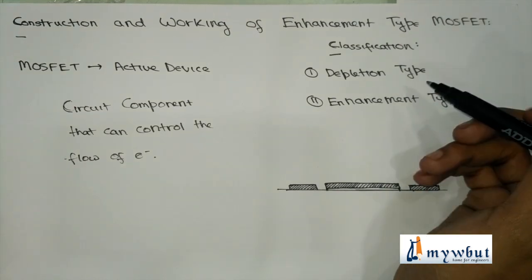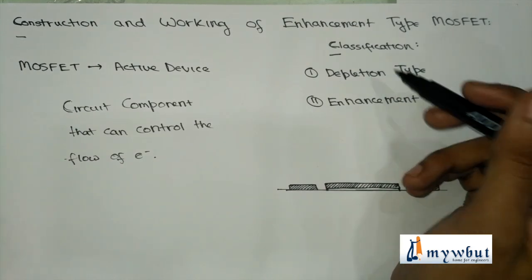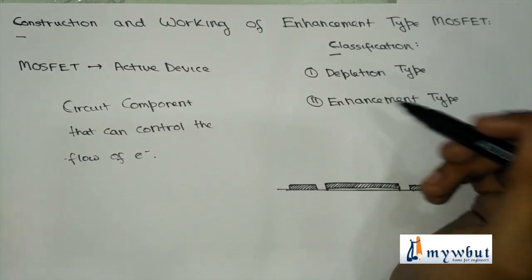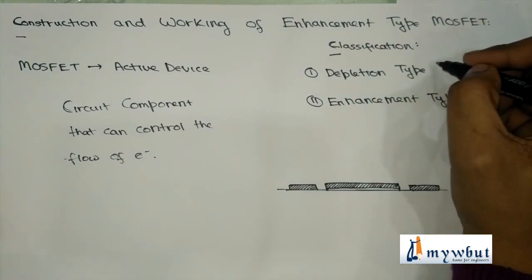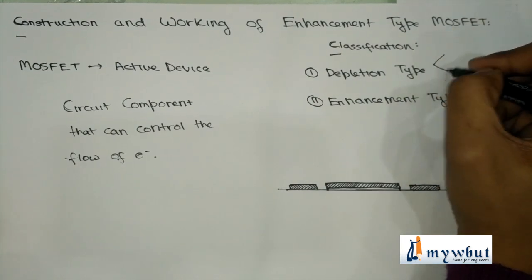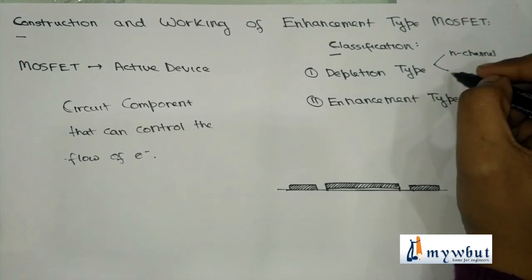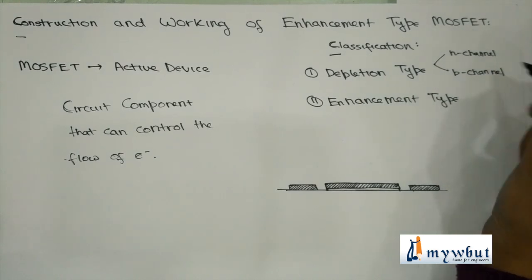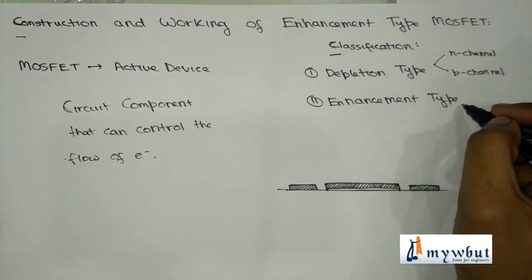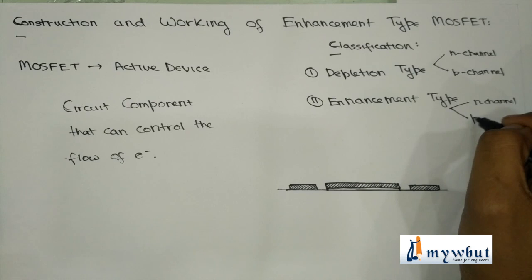So what are the types of MOSFET? MOSFET has basically two main types: depletion type and enhancement type. Depletion type can be further classified into N-channel and P-channel. Enhancement type can also be further classified into N-channel and P-channel.